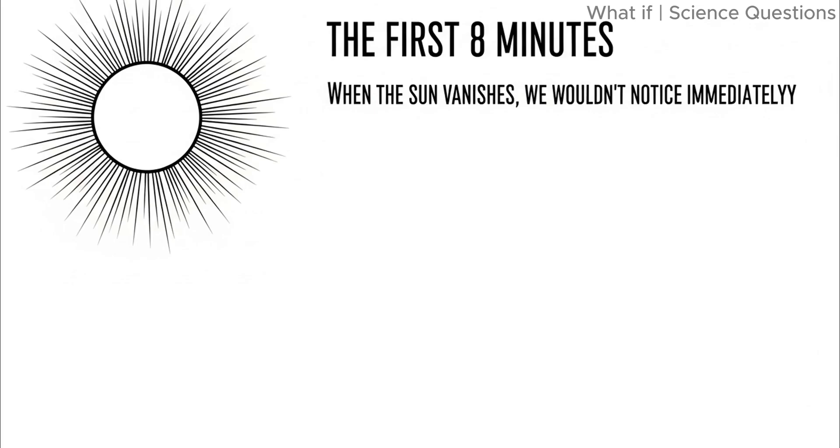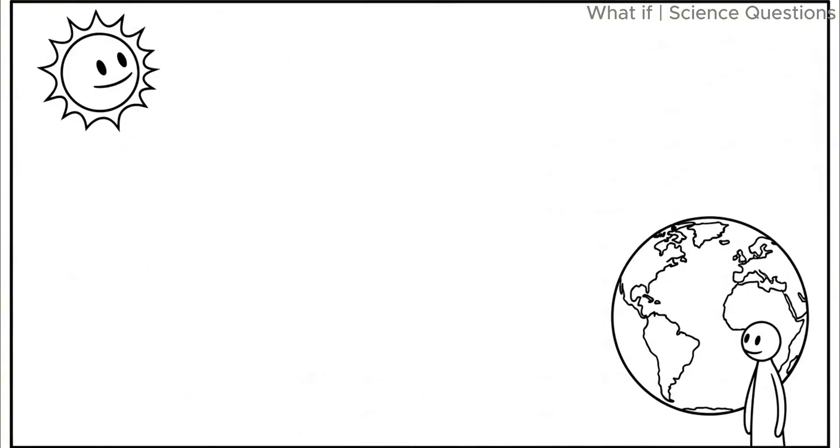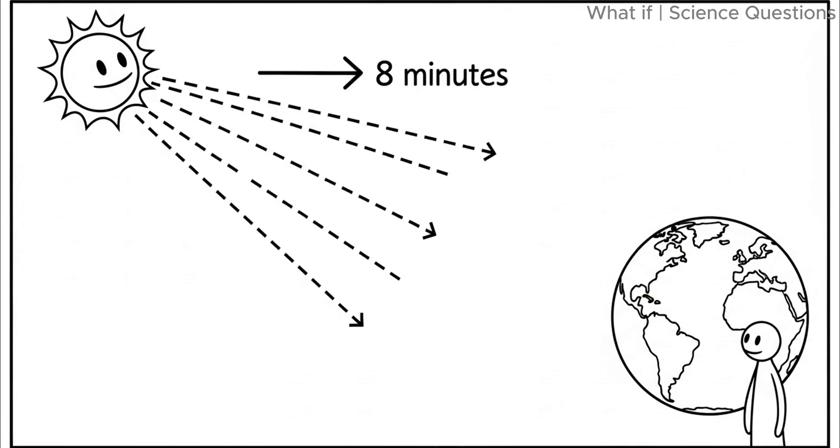But what would actually happen? Let's break it down, step by step. The first eight minutes. When the sun vanishes, we wouldn't notice immediately. Why? Because light takes about eight minutes to travel from the sun to earth.